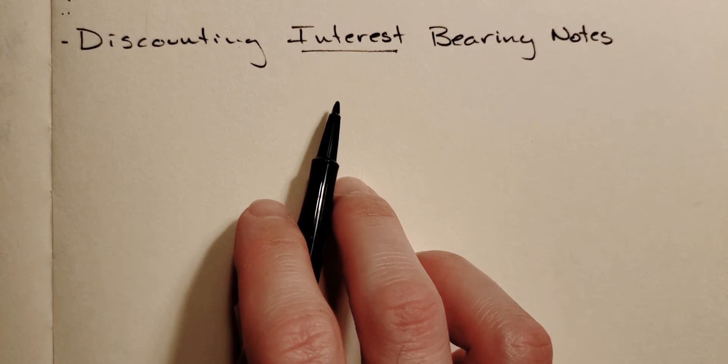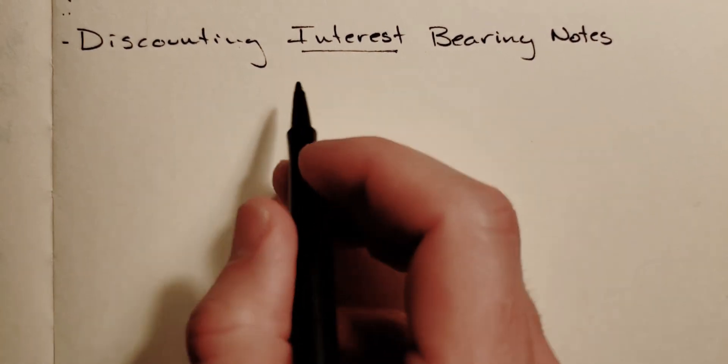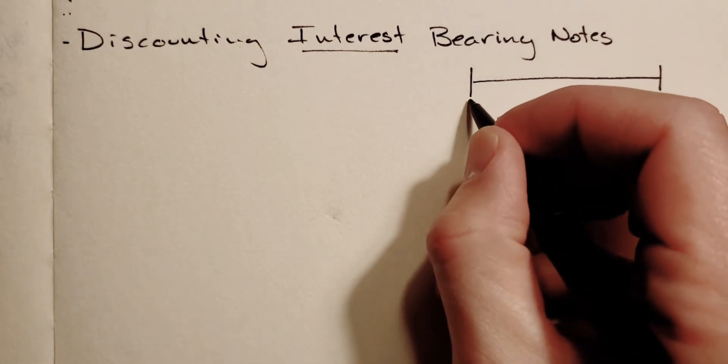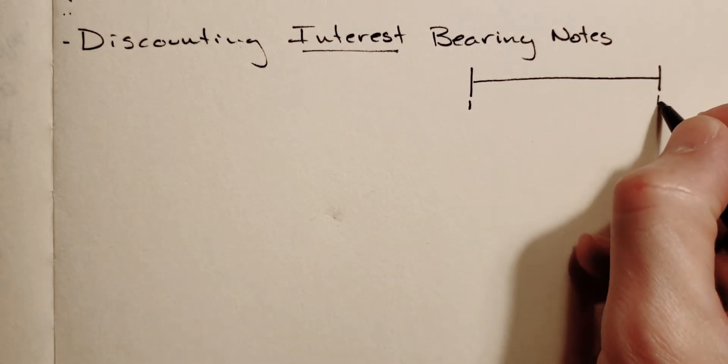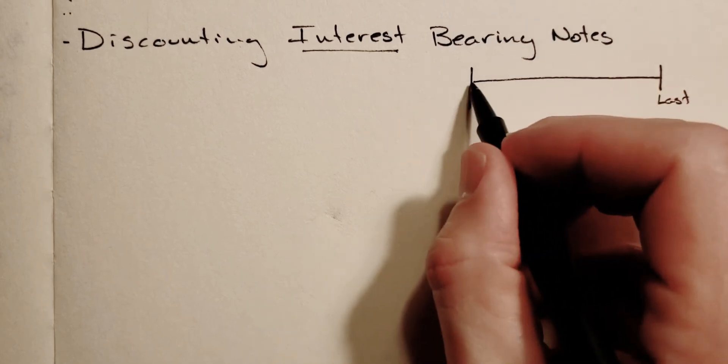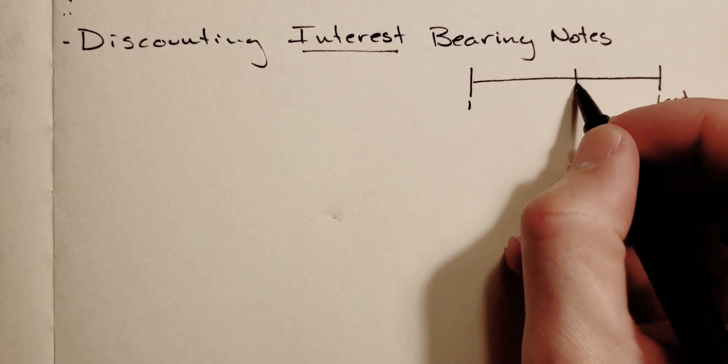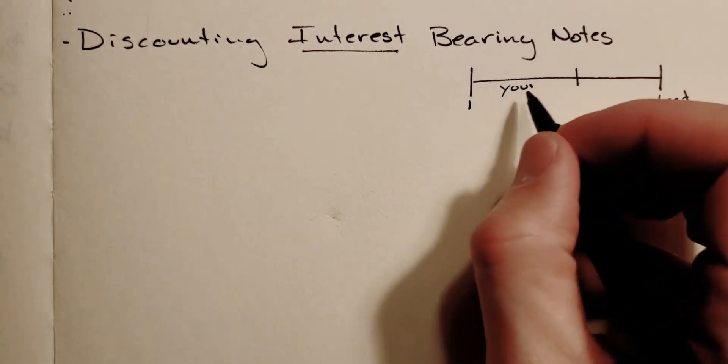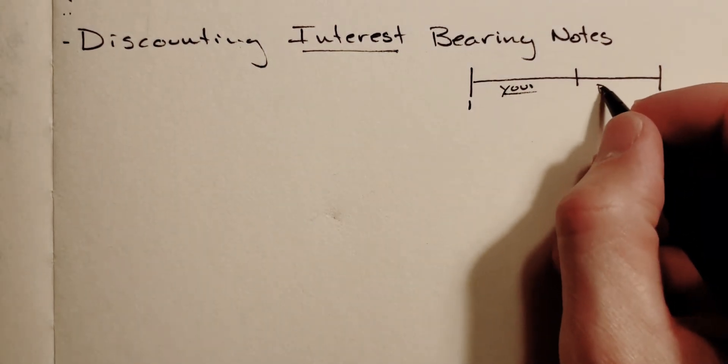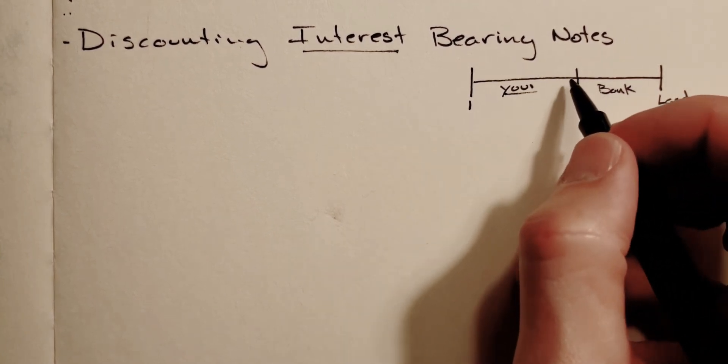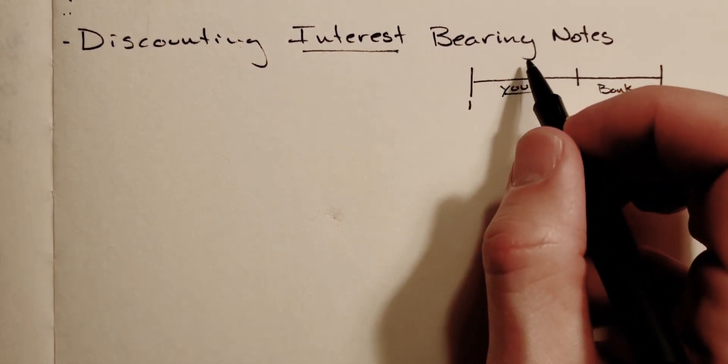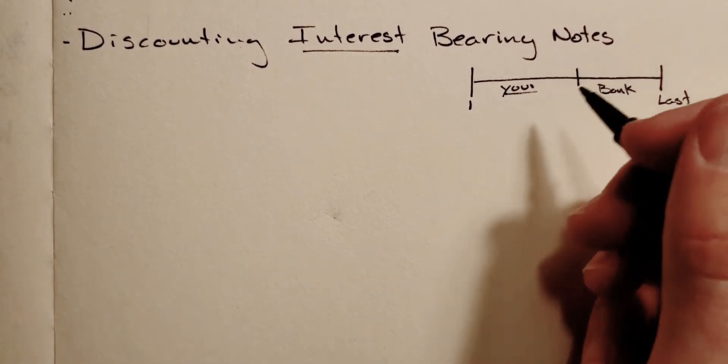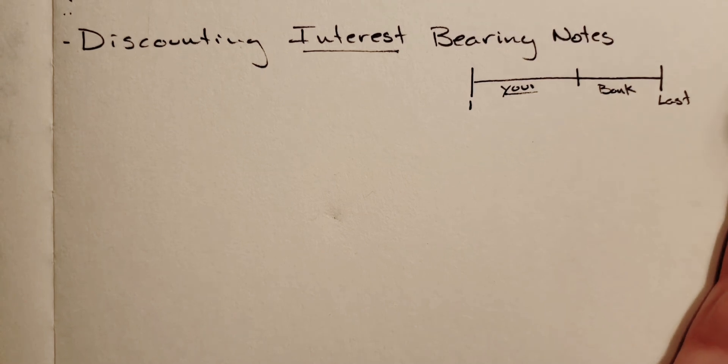And then we're going to calculate the discount period, because what this means is there's a situation where if this is the time for the loan, this would be the first day you get the loan and this would be the last day. Part of that loan time is going to be held by you or the company, and part of that loan time is going to be held by the bank.